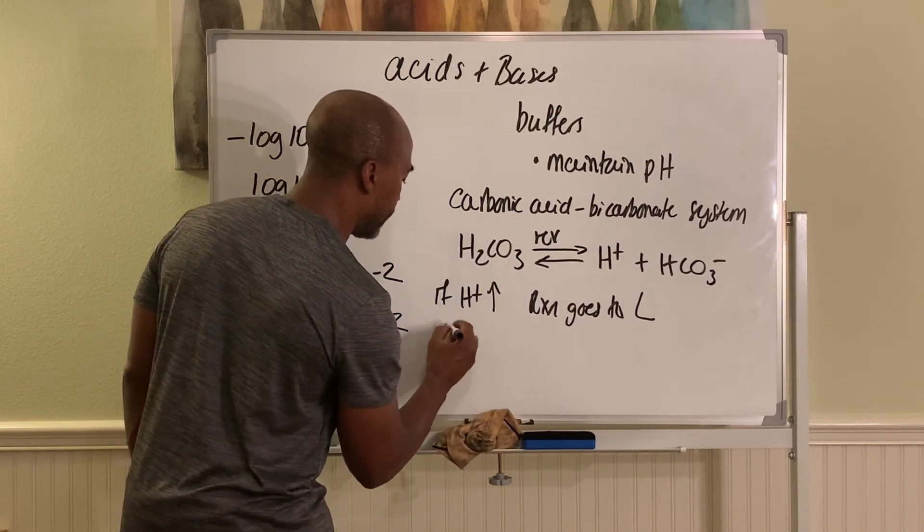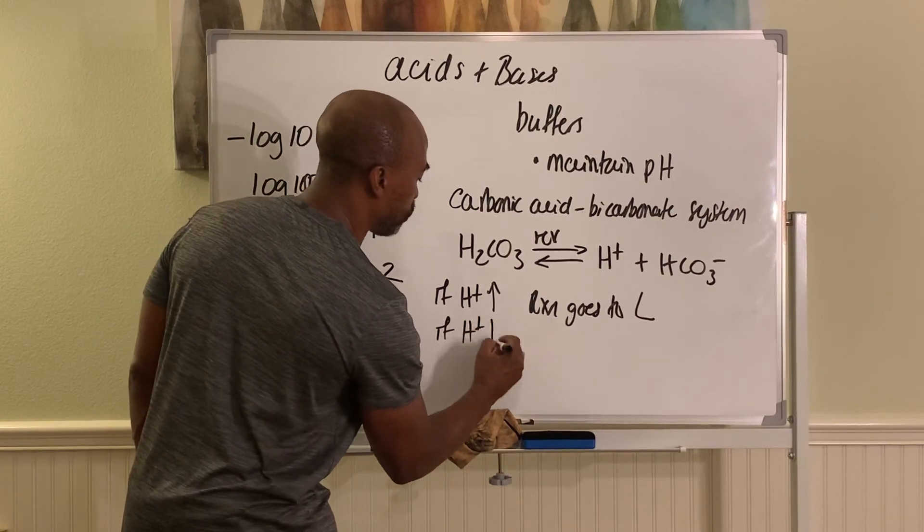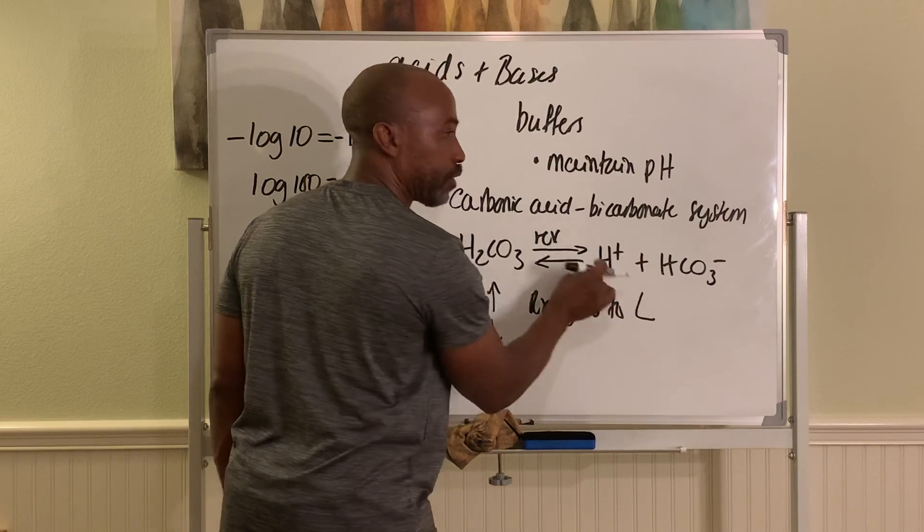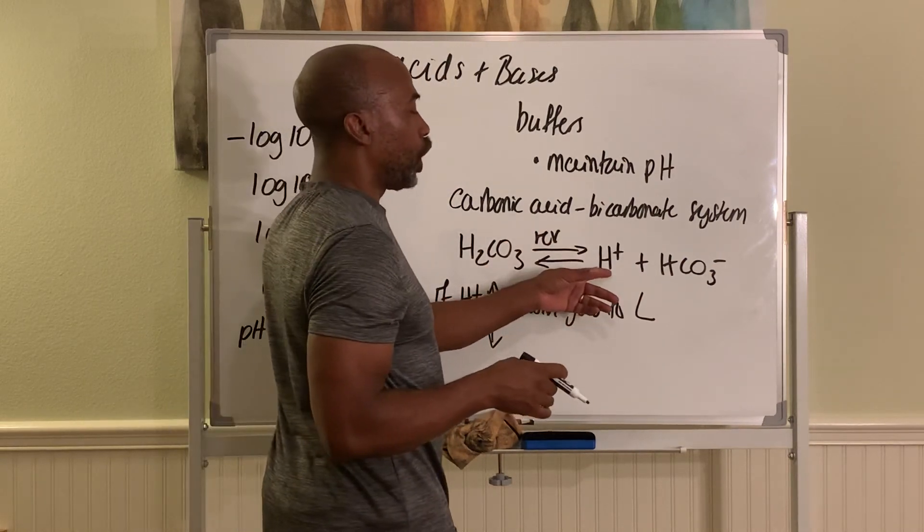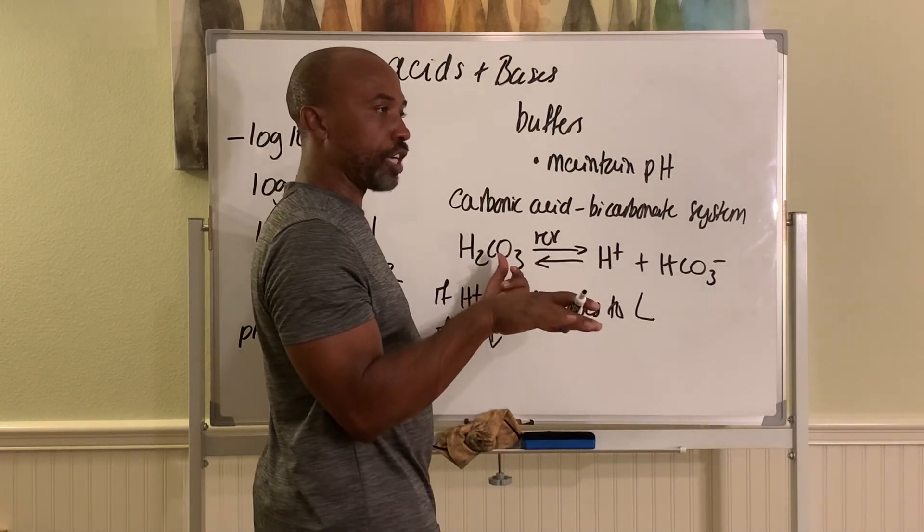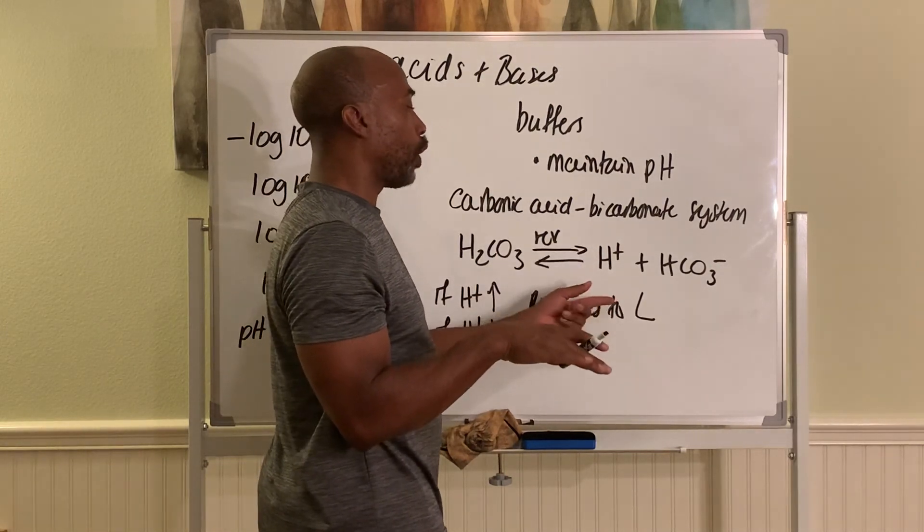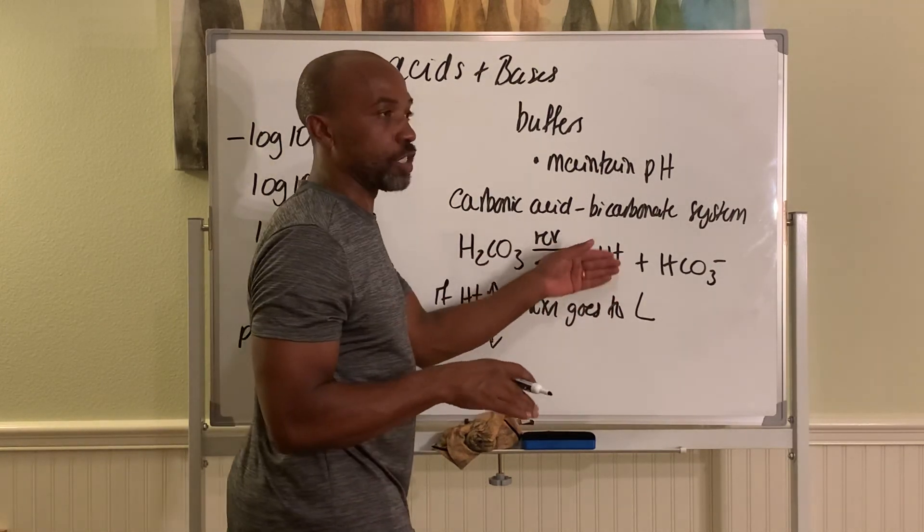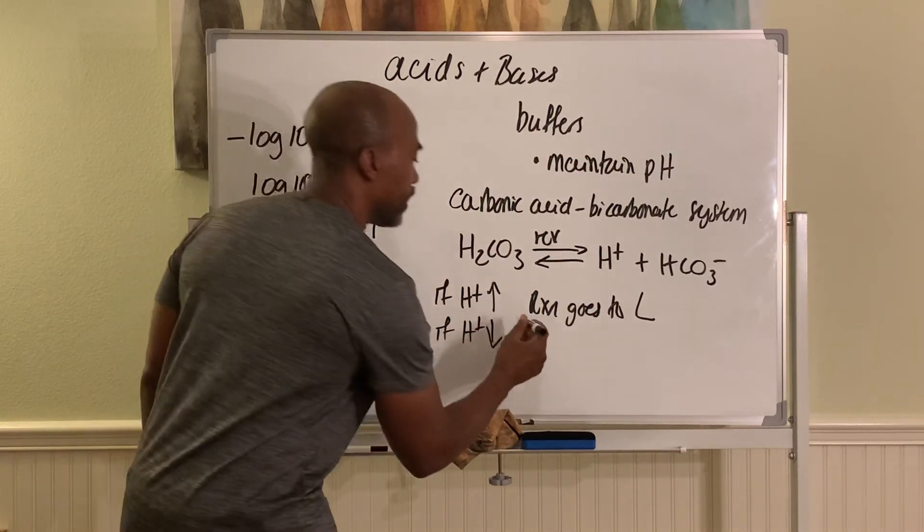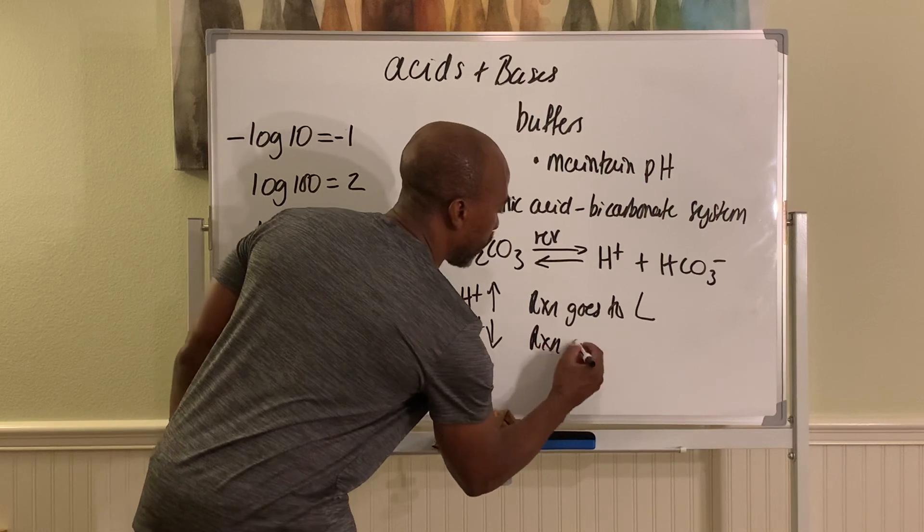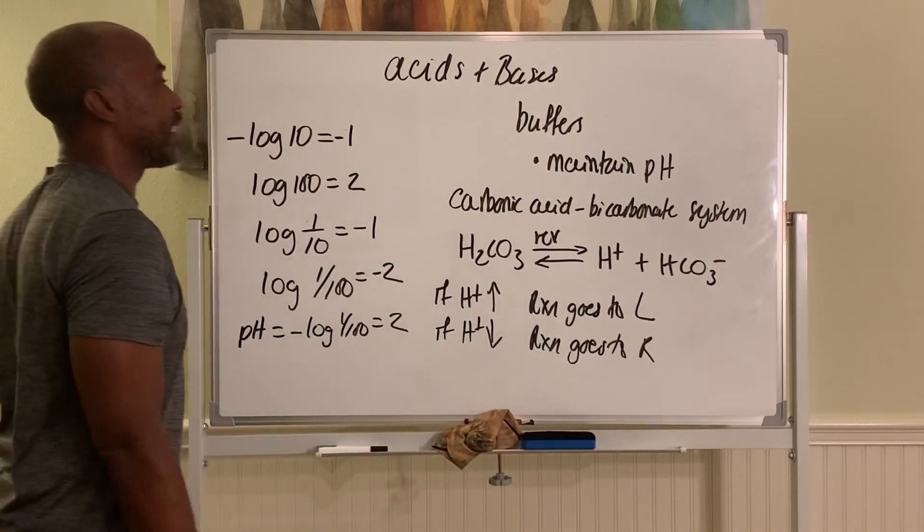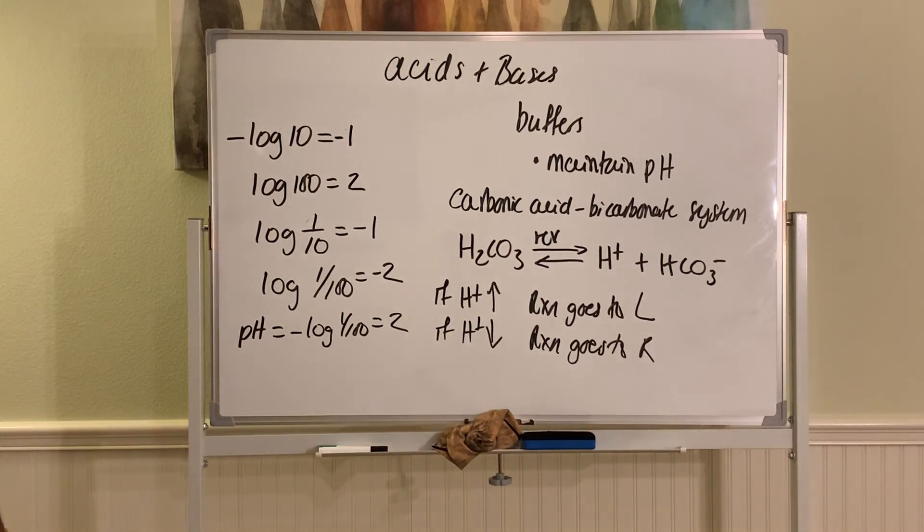And vice versa. If H plus levels drop, then the reaction goes this way to make more of it. So if you have too much of it, you want to combine it to make this, that way you lower its free concentration. And if it's too low, you want it to go this way to make more of it, to raise up its free concentration. And that way you maintain the H plus levels. So the reaction here goes to the right in that case. That's how buffers work. We'll stop there.